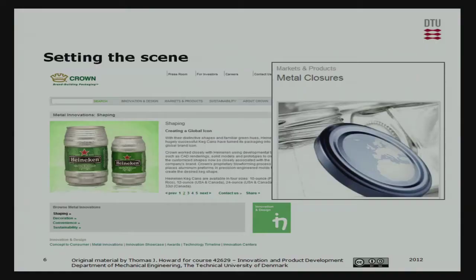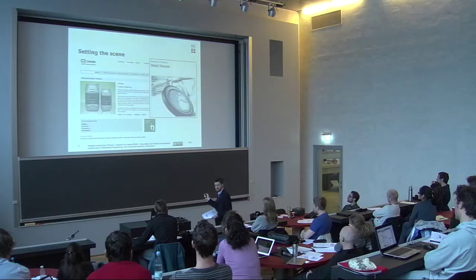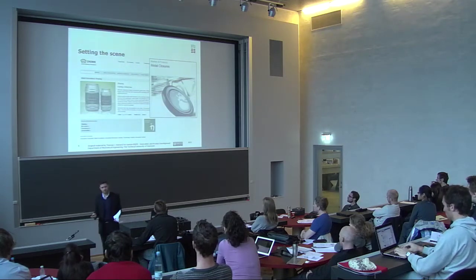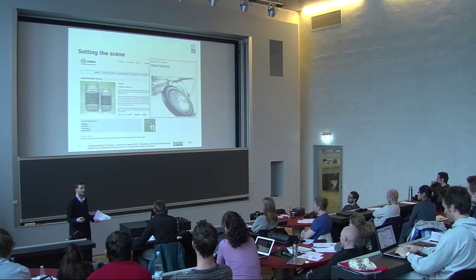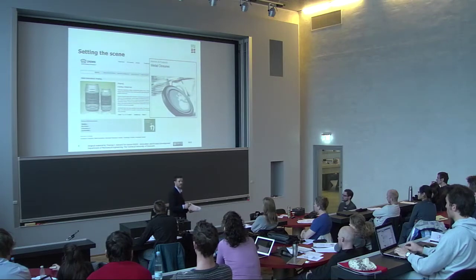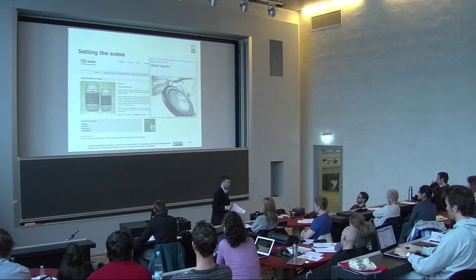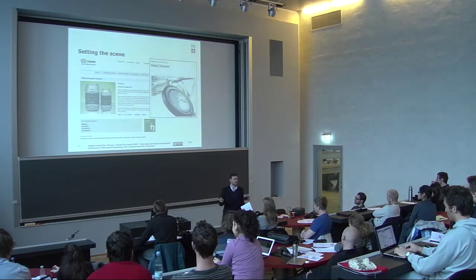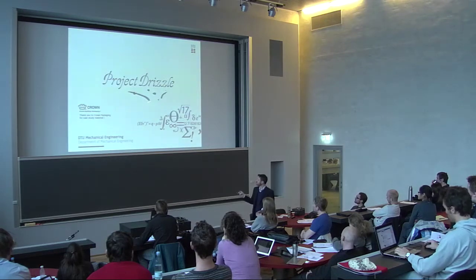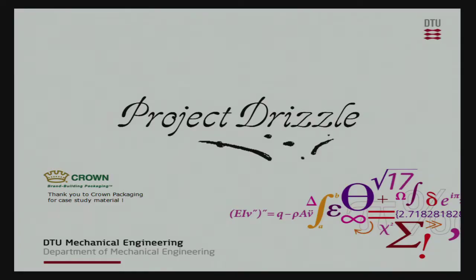They have various market segments, but the one I was working with was metal closures — things like jam jars, bottle tops, and so on. These are heavily mass-produced goods. Sometimes you think these are insignificant products, but when you consider that the world market for coat hangers is actually bigger than the world market for turbojet engines, you realize how important some of these things are. Shaving a milligram off a can is big business to these companies, and they have huge product development teams working on exactly those kinds of things. So this is the project — Project Drizzle. Thanks to Crown Packaging for letting us use this.